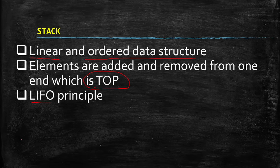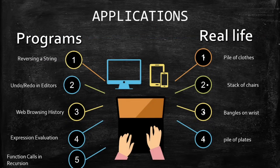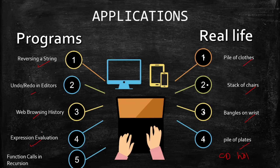For real-life examples you can mention: pile of clothes, stack of chairs, bangle on wrist, pile of plates, and CD holder. For programming examples: reverse a string, undo/redo in editors, web browsing history, expression evaluation, and function calls in recursion. Mentioning these will get you two or three marks.